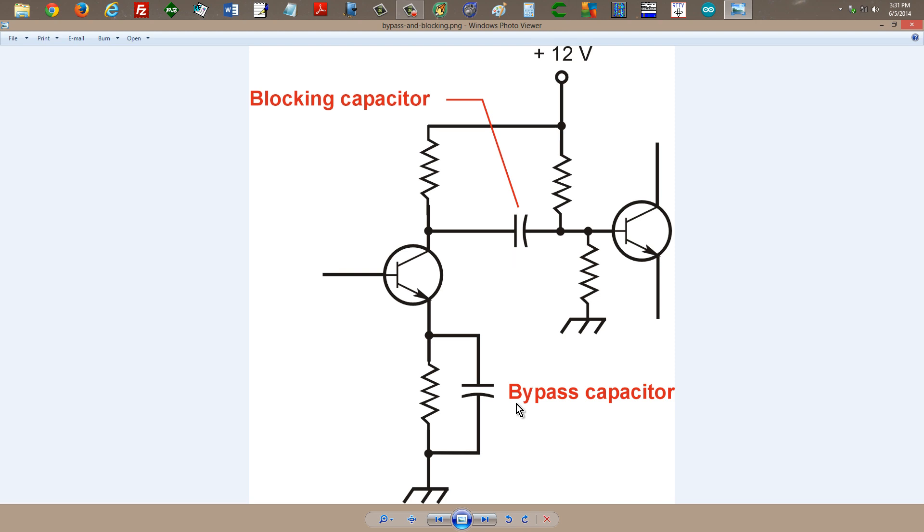The bypass, on the other hand, serves a very different purpose. That allows the signal to flow through and blocks direct current just like the blocking capacitor does, but instead of its purpose being to block something,